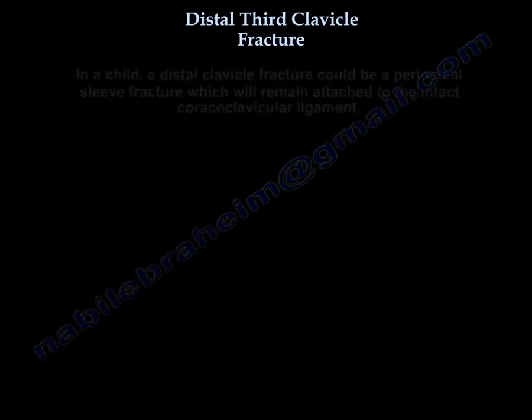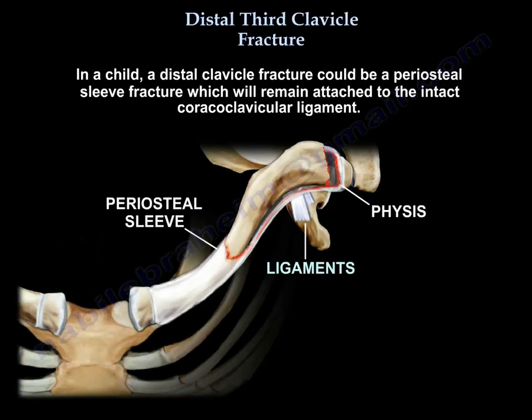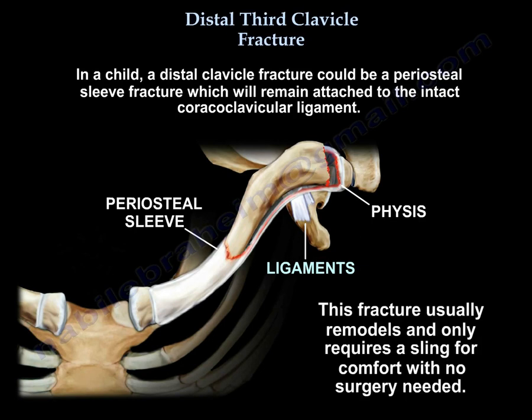In a child, a distal clavicle fracture could be a periosteal sleeve fracture, which will remain attached to the intact coracoclavicular ligament. This fracture usually remodels, and it needs only a sling for comfort — no surgery needed.